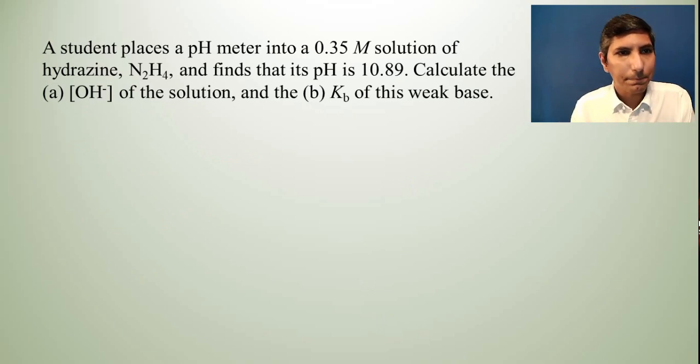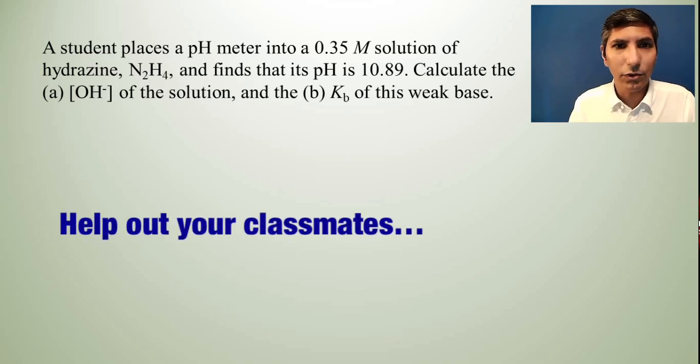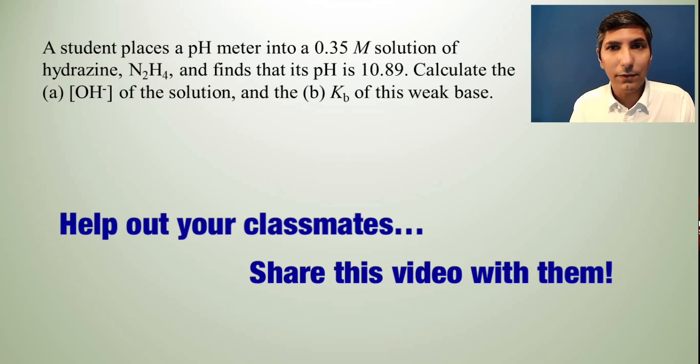Let's try another problem. In this one a student places a pH meter into a 0.35 M solution of hydrazine N2H4 and finds that its pH is 10.89. Calculate the hydroxide concentration of the solution and the Kb of this weak acid.